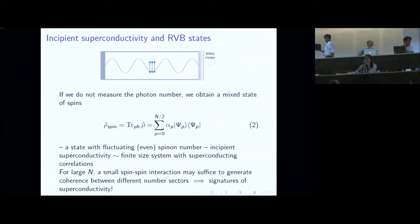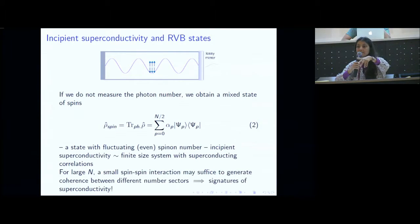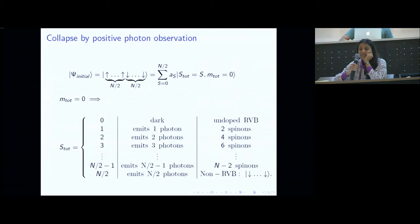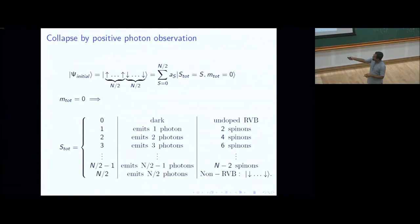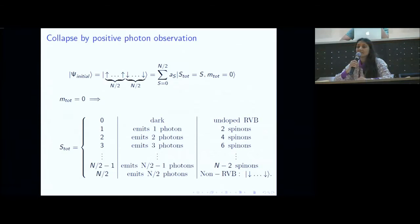Question about experimental limitations: could two photons be two consecutive single-photon emissions rather than a true two-photon state? The answer is that S_total is a good quantum number, so the total number of photons emitted is fixed. If you see one photon and wait long enough, you can be sure only one photon is coming — provided no decoherence occurred in the intervening time, which requires the decoherence timescale to be much larger.